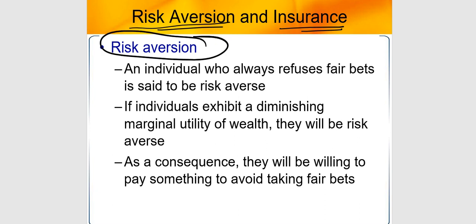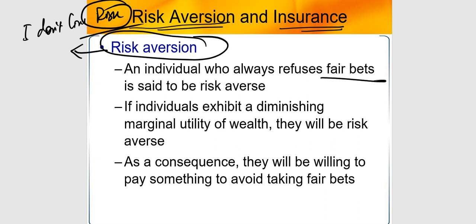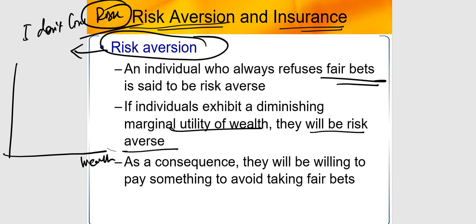So what is risk aversion? Basically, I don't like risk — these are normal people. In fair bets, a risk-averse person wants to settle for a relatively smaller amount of winning with almost zero risk. Diminishing marginal utility of wealth means they will be risk averse. The utility-wealth curve goes up after a certain point and then starts falling — that is the basic pattern.